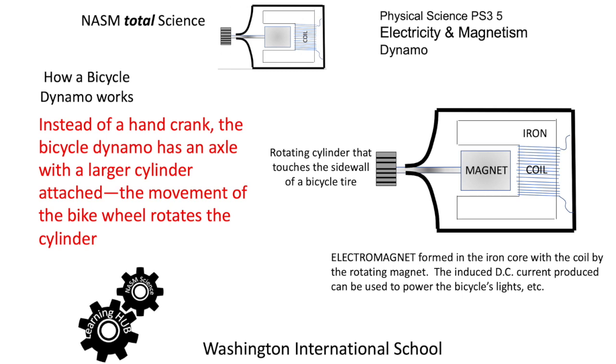We're looking at a small cylinder on the left-hand side which rotates when it touches the rotating bicycle wheel. That's going to rotate the magnet in the same way as we looked at in the other diagram.